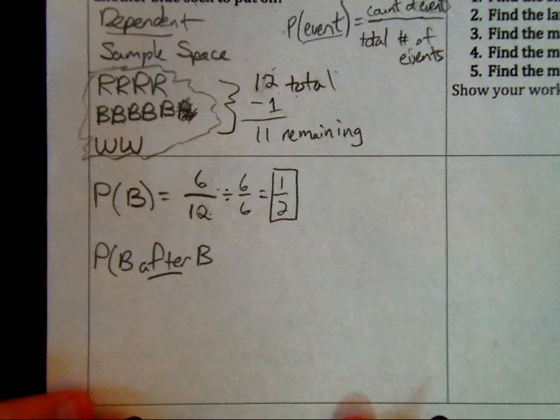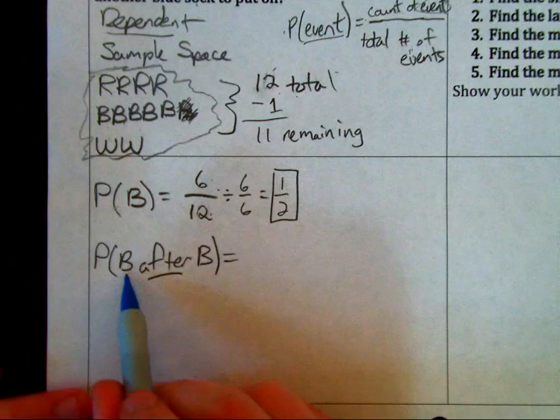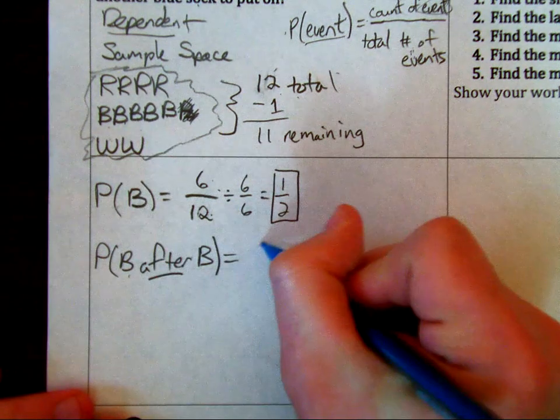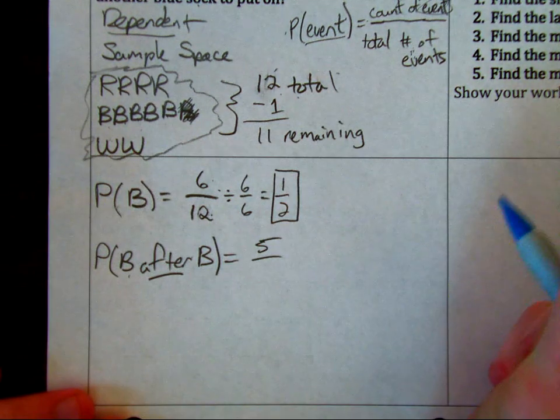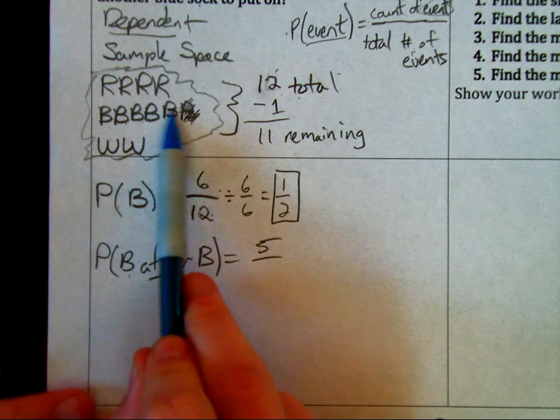Let's see, we can count. How many are blue? We have 1, 2, 3, 4, 5. So there are 5 blue ones. And then how many total do we have? We have 1, 2, 3, 4, 5, 6, 7, 8, 9, 10, 11.